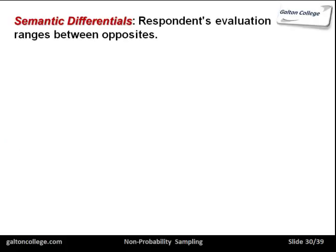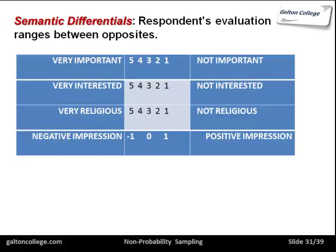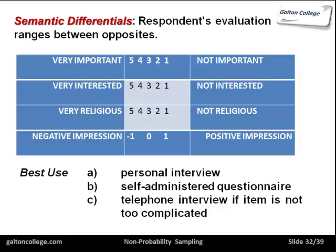Semantic differentials: respondents' evaluation ranges between opposites. So you simply say 'very important' to 'not important' and put a scale in between. Again, we have an odd number so people may be biased towards the center — a six-point or four-point might be better. Examples include: very interesting vs. not interested; very religious vs. not religious; negative impression vs. positive impression. You put a scale in between and select which one corresponds to the answer. These can be used in personal interviews, self-administered questionnaires, and telephone interviews.